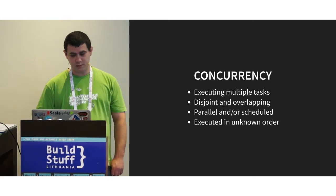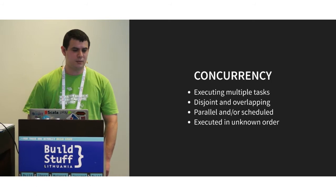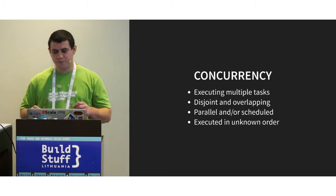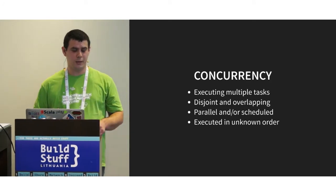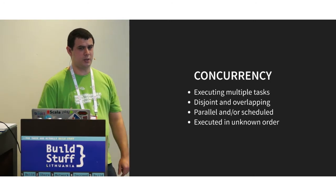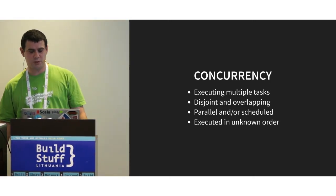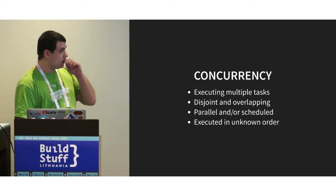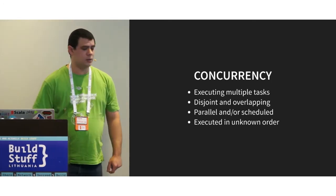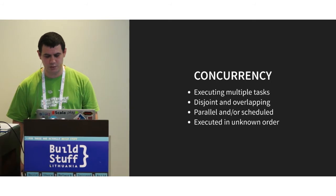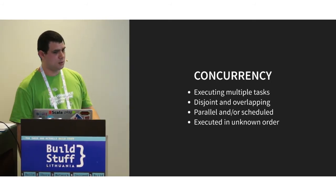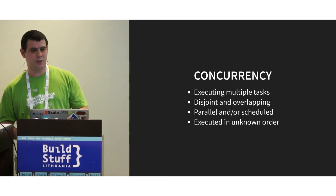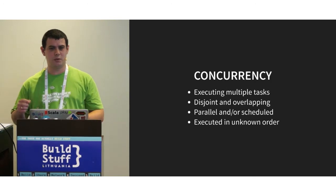Let's talk about concurrency. What is it? I like to think about it as: if we have a computation to make, we can split it into small tasks that we execute in a disjoint and overlapping way. Those tasks can be scheduled in parallel on multiple processors, or in arbitrary slices of time on a single core. Those tasks are executed in unknown order — we cannot make any assumptions about their execution. However, each task is a sequential, linear sequence of operations, but we cannot determine the order of that execution relative to other tasks.